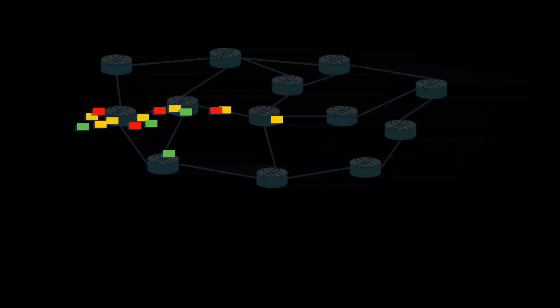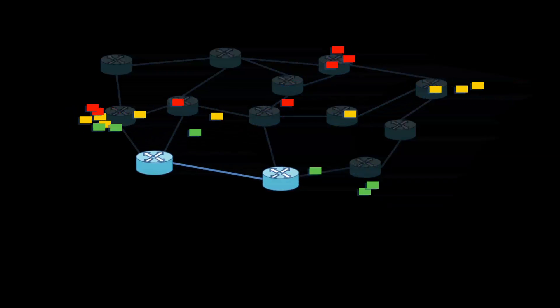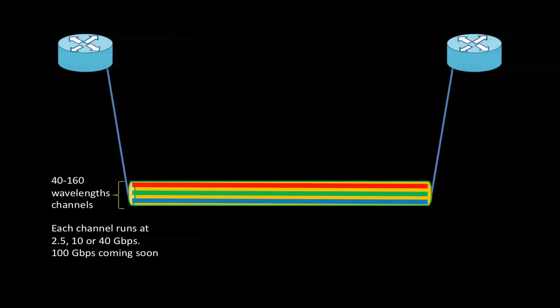The Internet is a packet switch network where packets are switched hop-by-hop from source to destination by IP routers. But the packets are transported between the routers in an underlying nationwide network of optical fibers and circuit switches.